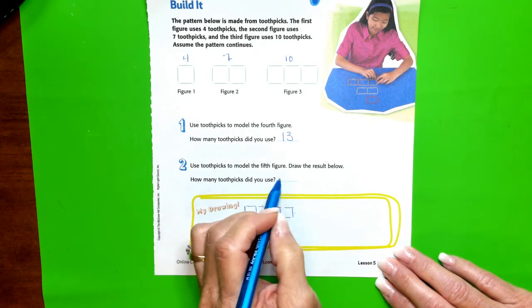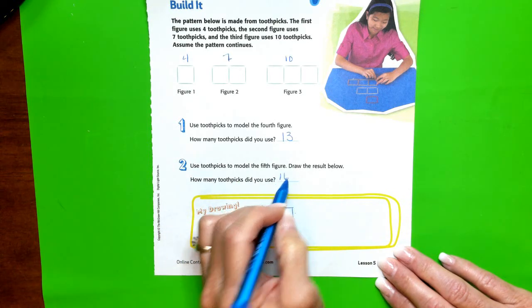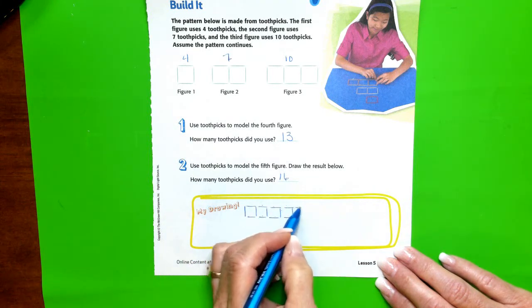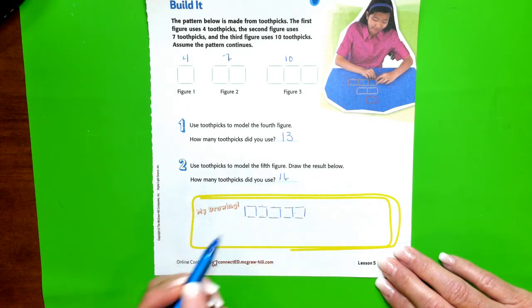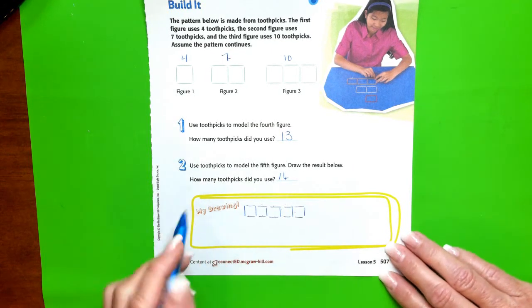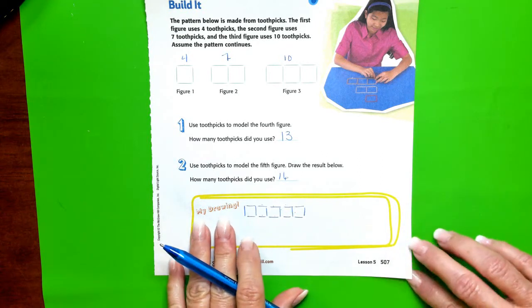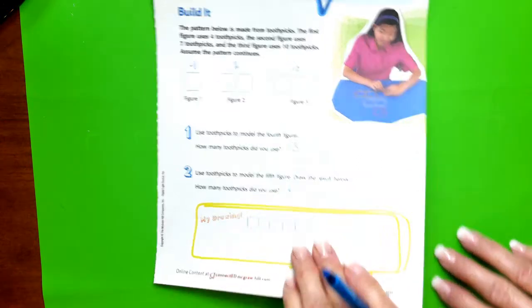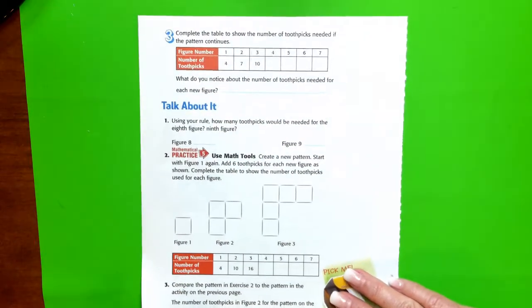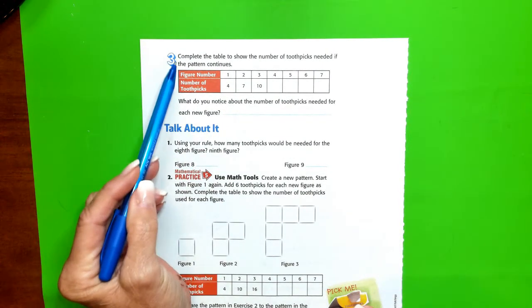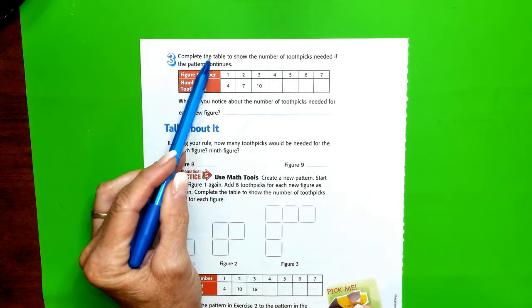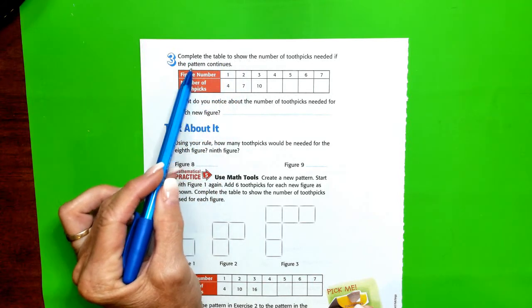Hopefully you said 16. So there's 13, 14, 15, and 16. We used 16 toothpicks to create our fifth figure. Step 3 says to complete the table to show the number of toothpicks needed if the pattern continues.